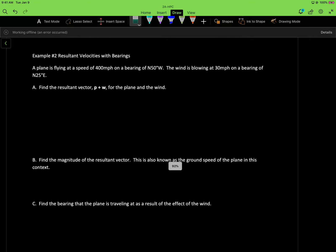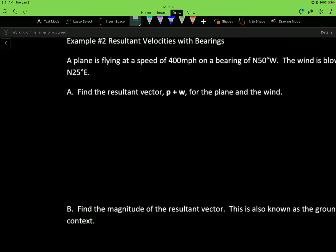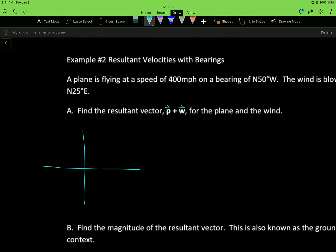So the next example we're looking at is similar to the first one. I'm going to break it down into components and do it algebraically. So we've got vector P for the plane and vector W for the wind. I'm going to draw each vector in its own axis. The plane, vector P, is flying at a speed of 400 miles per hour, so that's our magnitude. And that's going to be west, 50 degrees west of north.